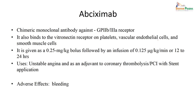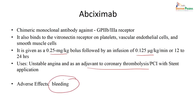One of the commonest drugs in this class is abciximab. It is a chimeric monoclonal antibody antagonist to glycoprotein 2B/3A receptors. It binds to vitronectin receptors on platelets, vascular endothelial cells, and smooth muscle cells. This drug is given as a bolus dose of 0.25 mg/kg followed by infusion of 0.125 mcg/kg/min for 12 to 24 hours. It is used in patients with unstable angina, as an adjuvant to coronary thrombolysis, or for percutaneous interventions with stent application. It should be avoided in cases of any history of intracranial bleeding due to the risk of excessive bleeding.